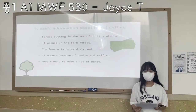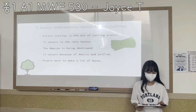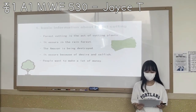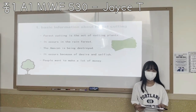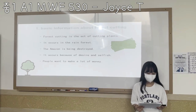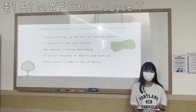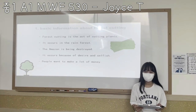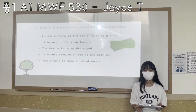First, I will give some basic information. Forest cutting is the act of cutting down plants such as trees. Typically, it occurs in the rainforest — for example, the Amazon. The Amazon, called the lungs of the Earth, is being destroyed by humans.